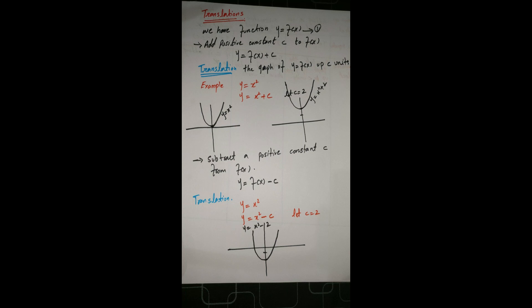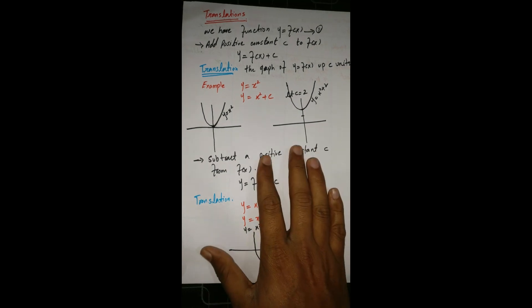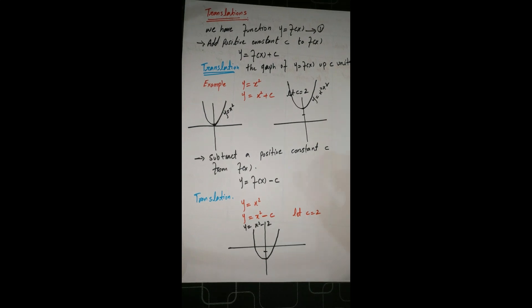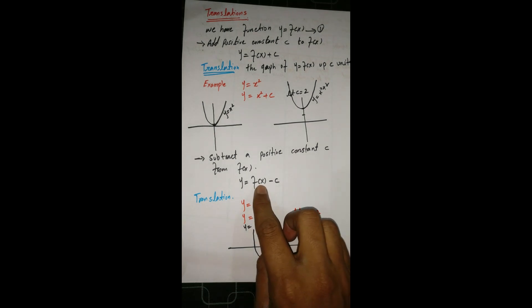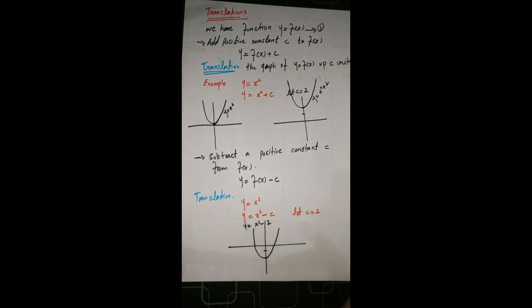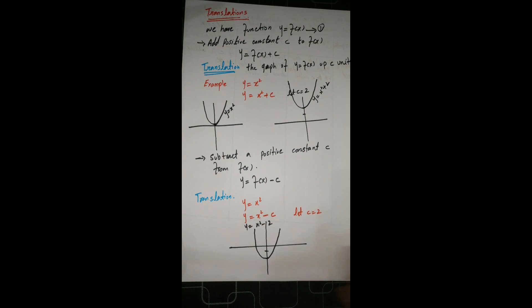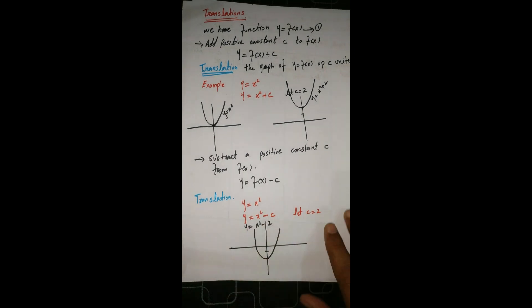This is the translation of a graph when we add or subtract a constant from a function. Now, sometimes we also add or subtract a constant from our independent variable — we replace x by x + c or x - c — to check what is the effect on the graph.